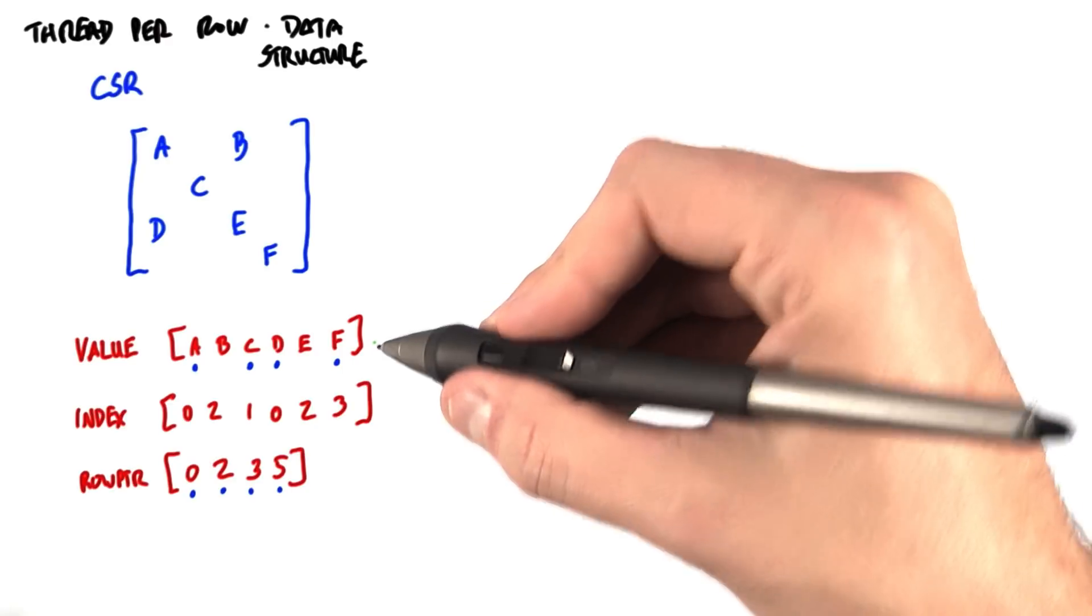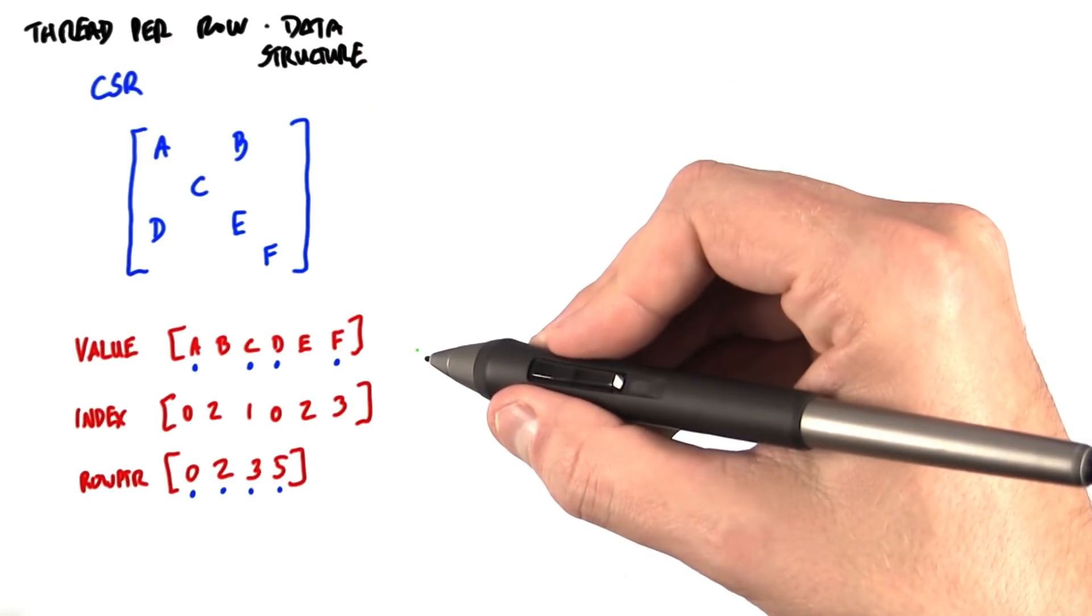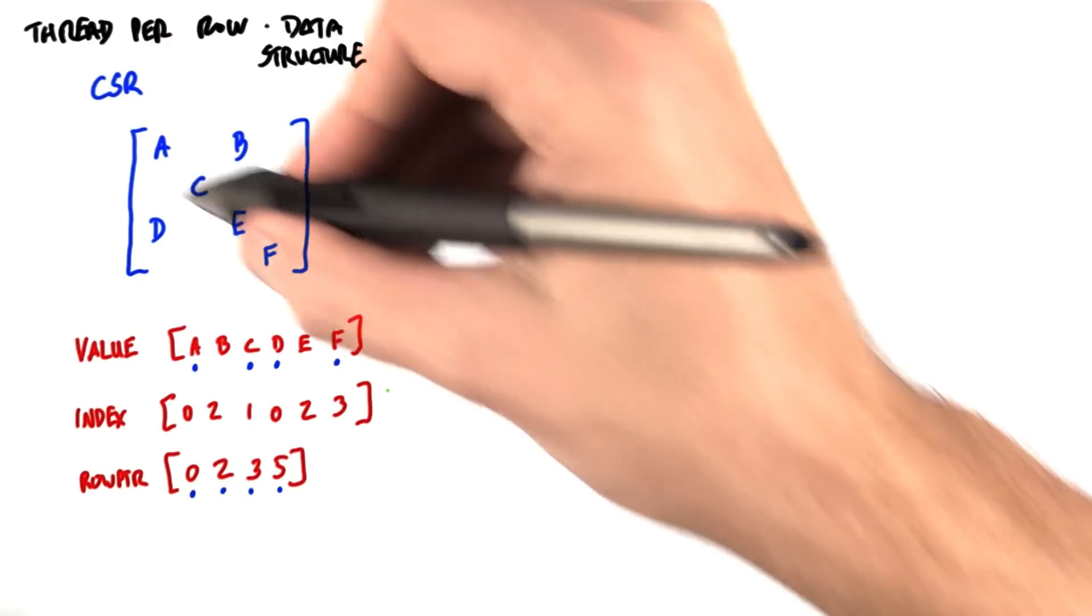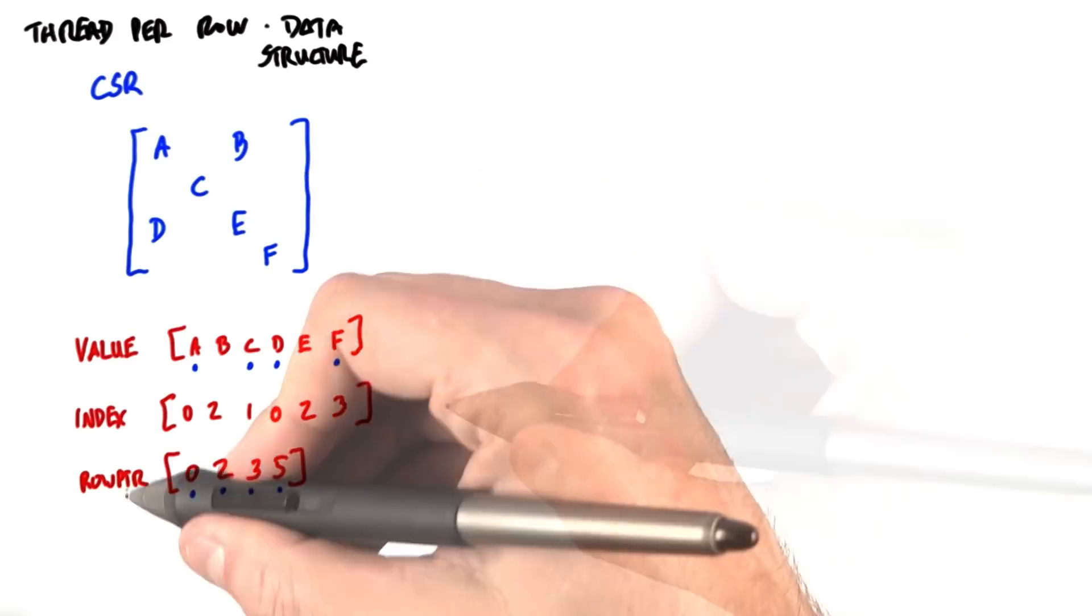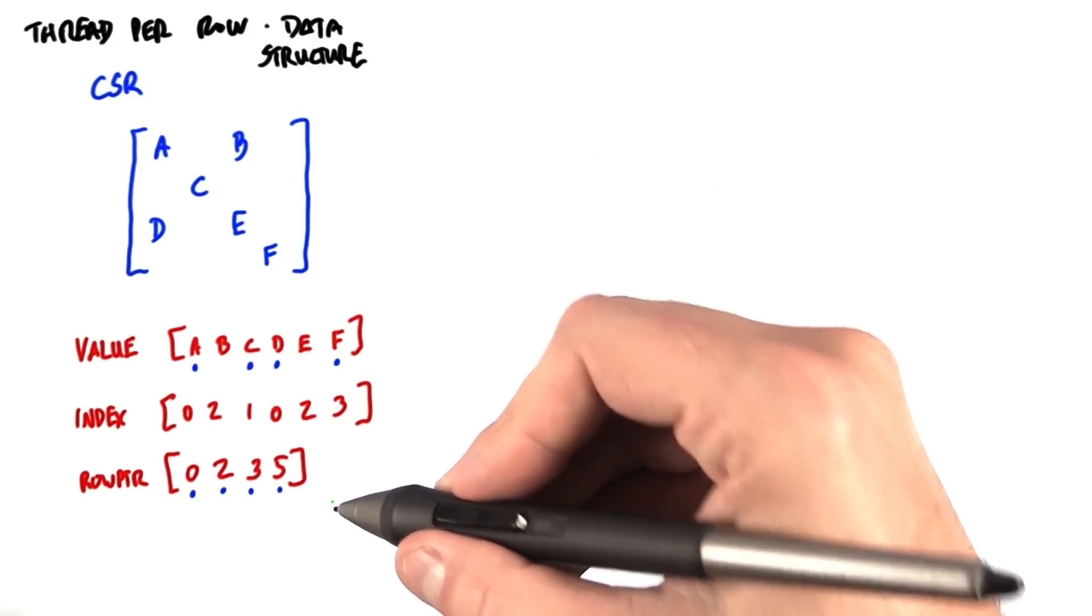Recall that value contains the non-zero elements in the matrix, index gives the column of each entry, and row pointer contains the index of the beginning of each row.